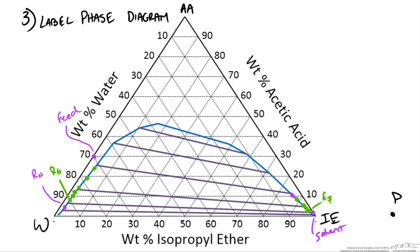Continuing this process, I find that it takes about 10 stages. The graphical method gets close to the bottom lines and becomes a little trickier, so it is good to use a ruler and do this on paper.